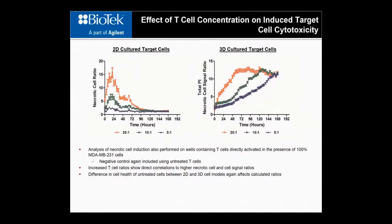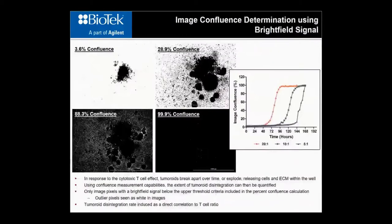This type of data normalization and comparison was also performed for wells containing 100% directly activated T-cells at ratios of 20:1, 10:1, and 5:1 over target cancer cell numbers. The effect of higher T-cell ratios is quite obvious, causing a higher necrotic cell ratio for 2D cultured cells and a faster induction of target cell necrosis in 3D cultured cells. The difference in viability of cancer cells over time again affects the ratios for 2D cultured cancer cells as it did in the previous comparison.